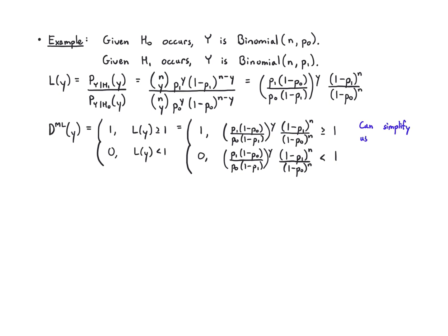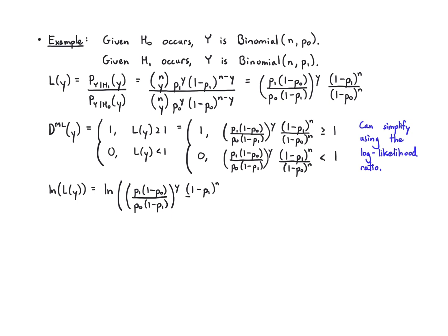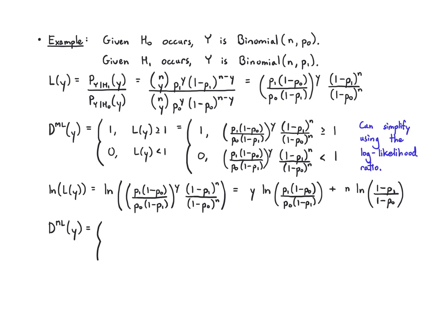We can simplify this further using the log likelihood ratio — just take logs of both sides. The log brings Y out of the exponent, so we get Y times log of (P1(1 minus P0)) over (P0(1 minus P1)), plus N times log of (1 minus P1) over (1 minus P0). The ML rule is just comparing that expression to 0. This is as simple as we're going to get it in the general case.